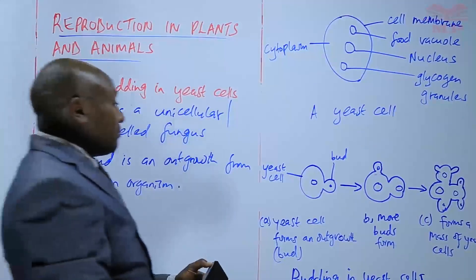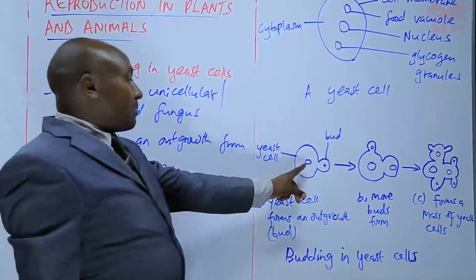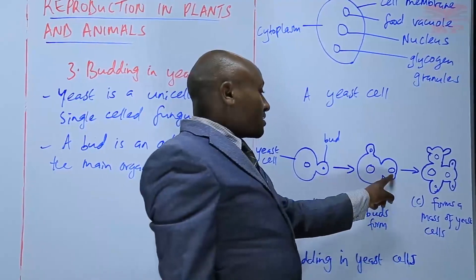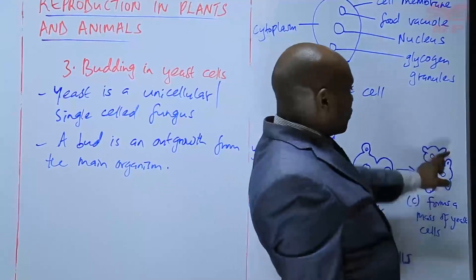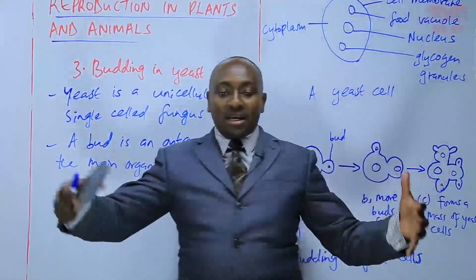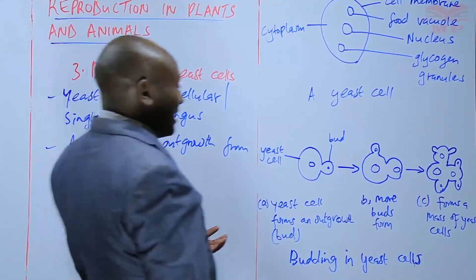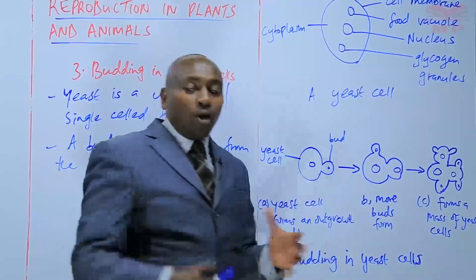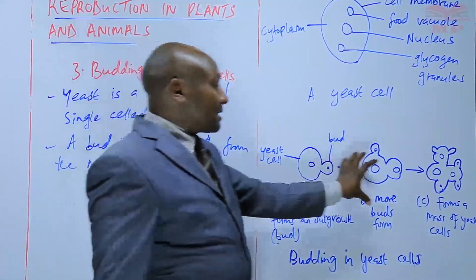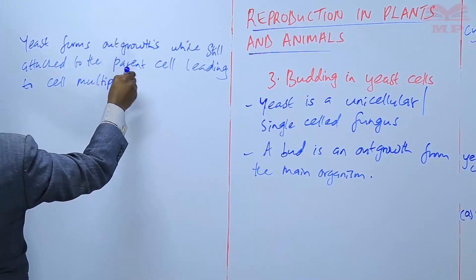It starts by forming one bud or one outgrowth while still attached to the parent cell. Another outgrowth then forms, the previous one is still enlarging, and others continue forming. In the process, a mass of yeast cells is formed. This is budding — the formation of outgrowths while still attached to the parent cell, leading to cell multiplication.